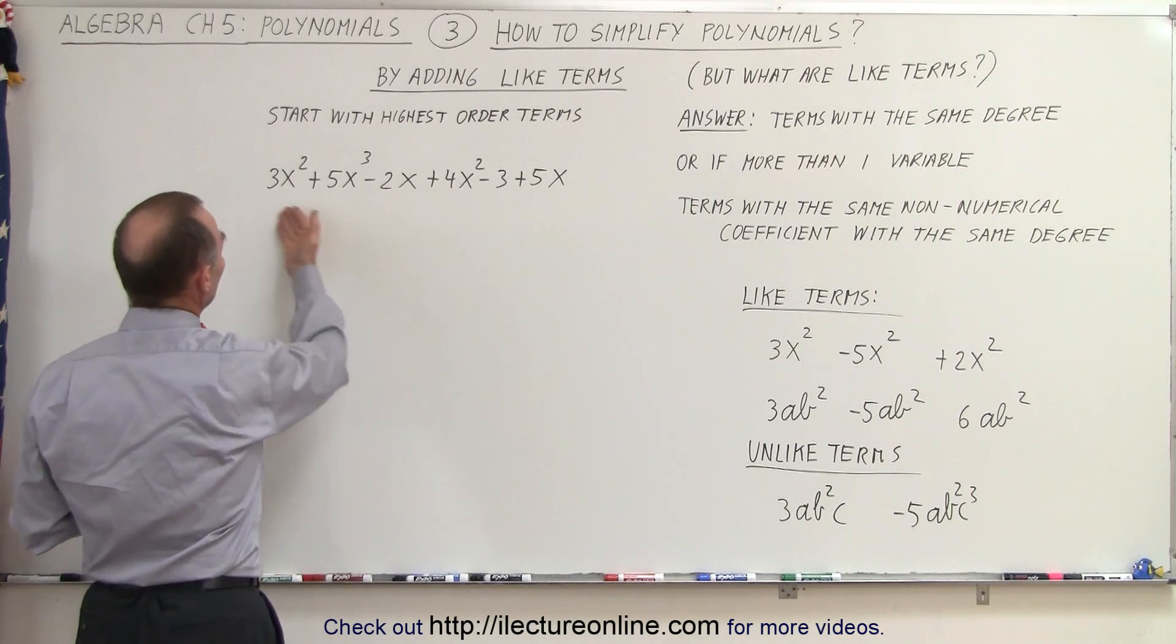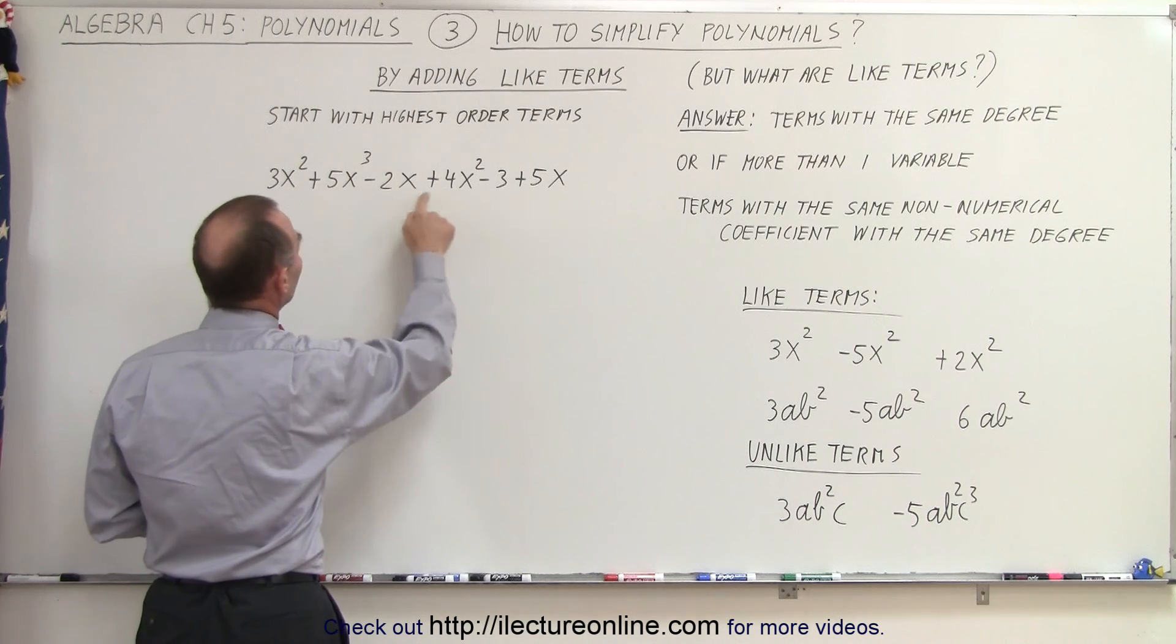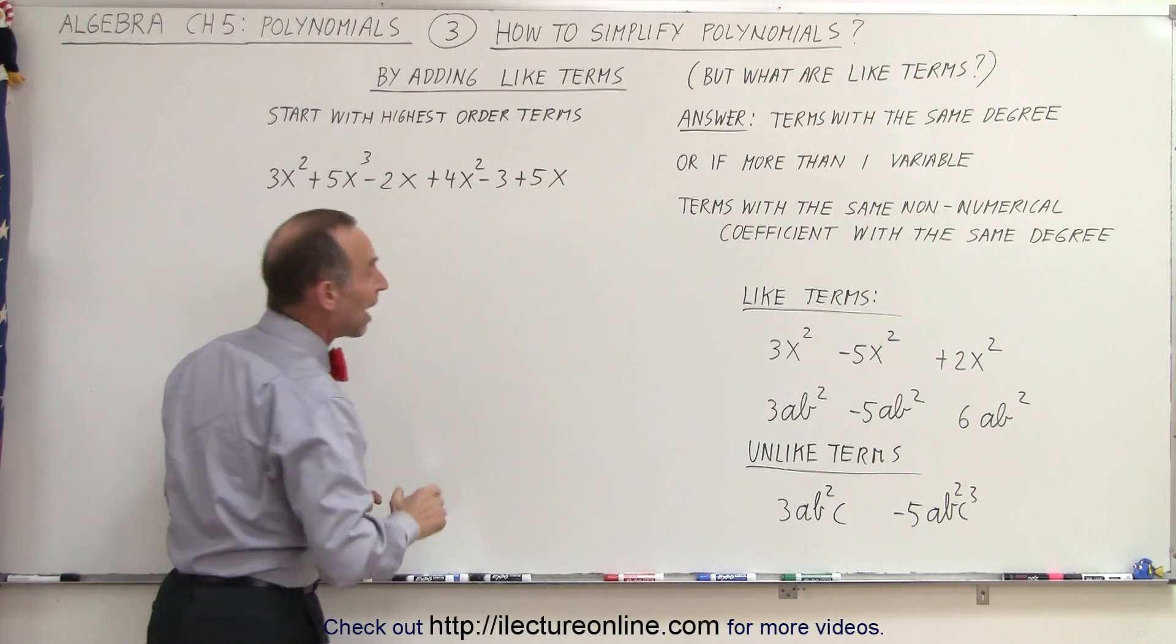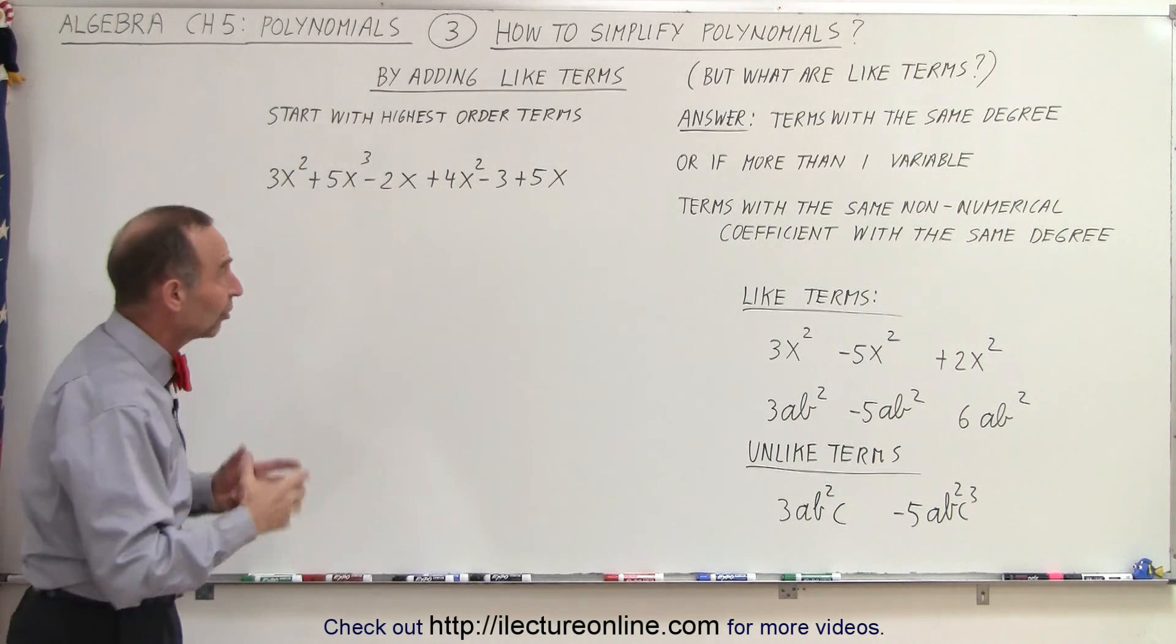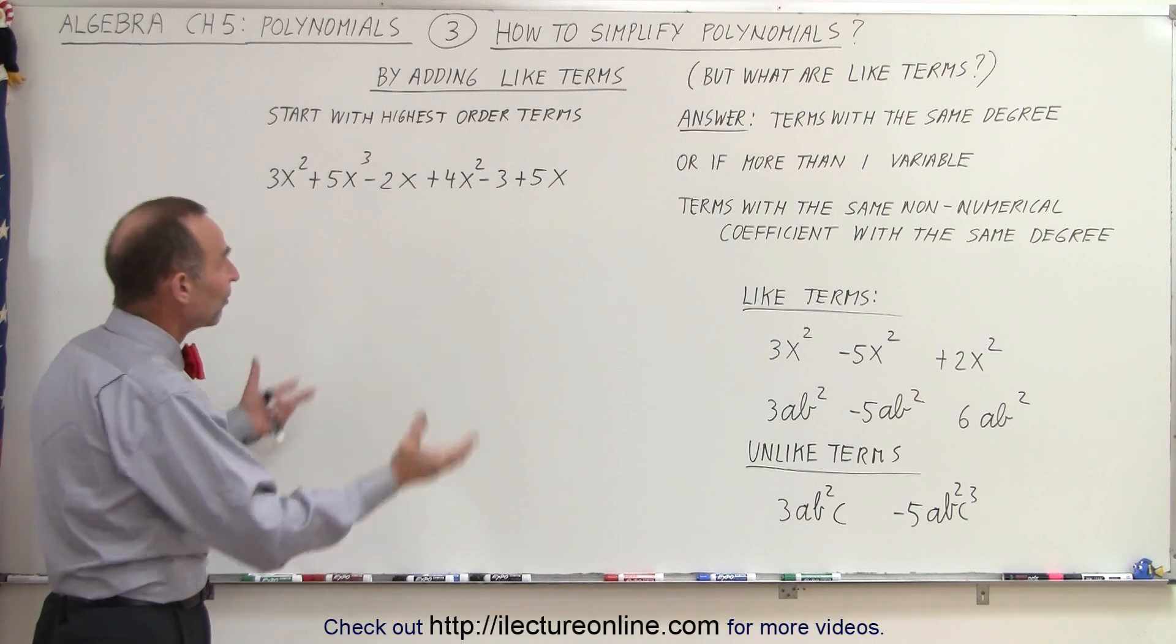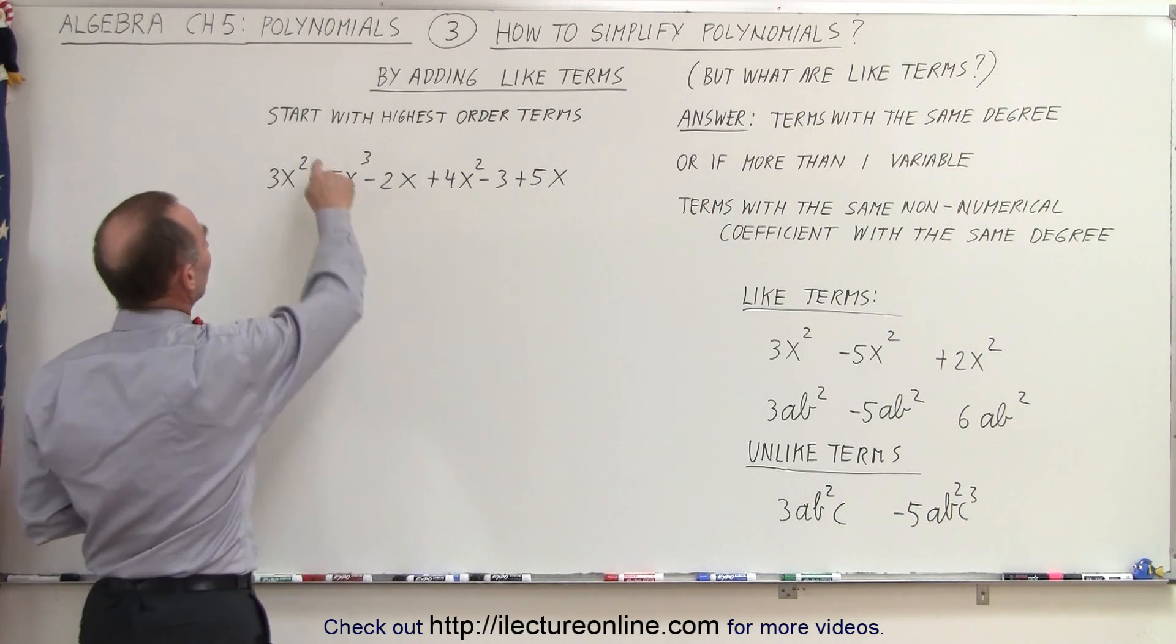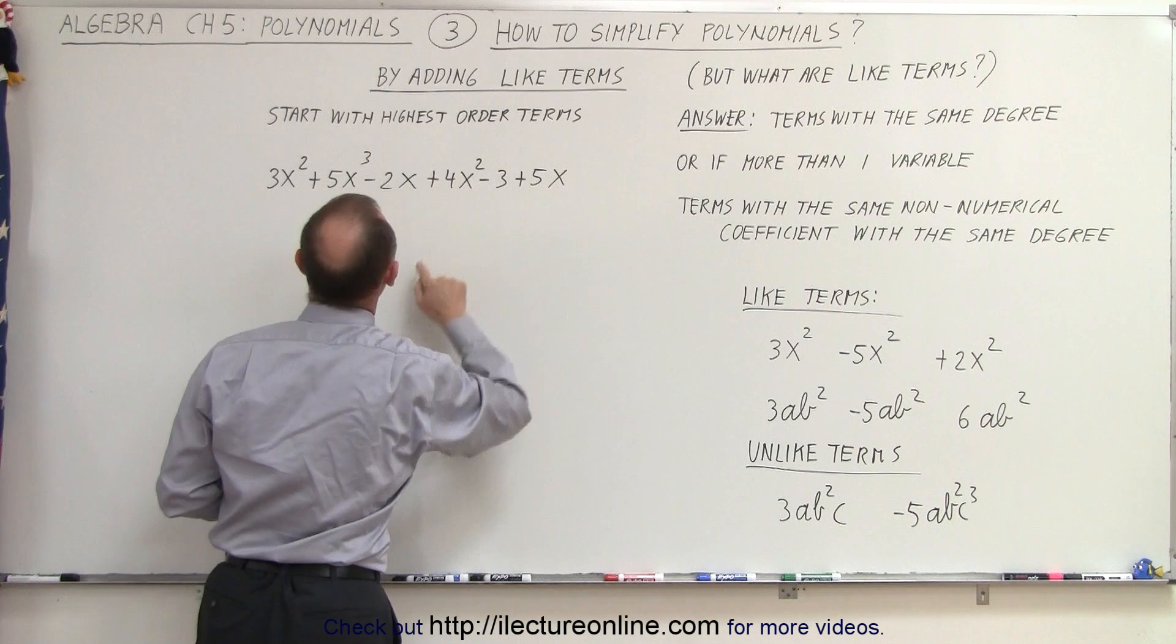So next, let's say we have a polynomial like this with a number of terms. Notice there's only one variable and the variable has different powers. Now, some of the terms are the same, some of the terms are not the same. So if we're going to simplify a polynomial, we're going to add like terms together. And we're advised to start with the highest power.